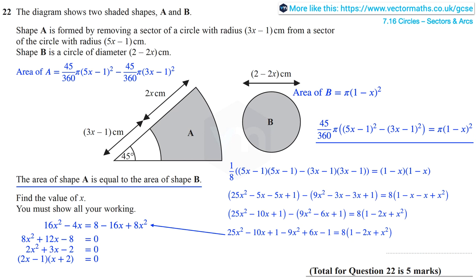And actually this factorizes as 2x minus 1 times x plus 2 equals 0. And we obtain the solutions x equals one-half or x equals minus 2. But of course x cannot be negative given the context of the question. Therefore x equals one-half is our answer.